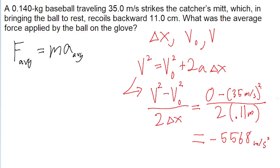So now that we have the average acceleration, now we can put that into our force equation to find the force from the ball. This is equal to the mass of the ball, or 0.140 kilograms, multiplied by the average acceleration of negative 5,568 meters per second squared. Put this into a calculator, and we find an average force of about negative 780 newtons.